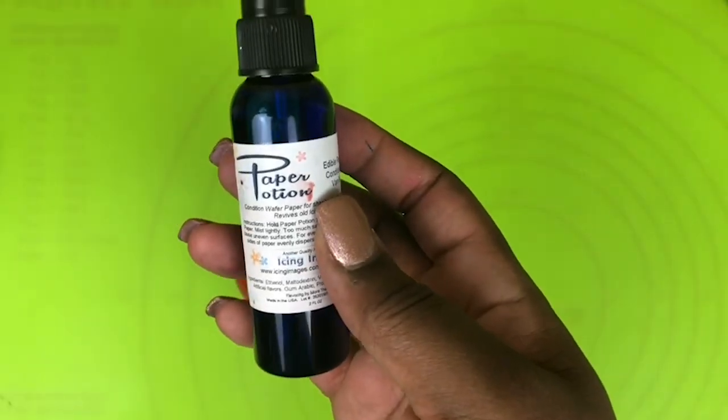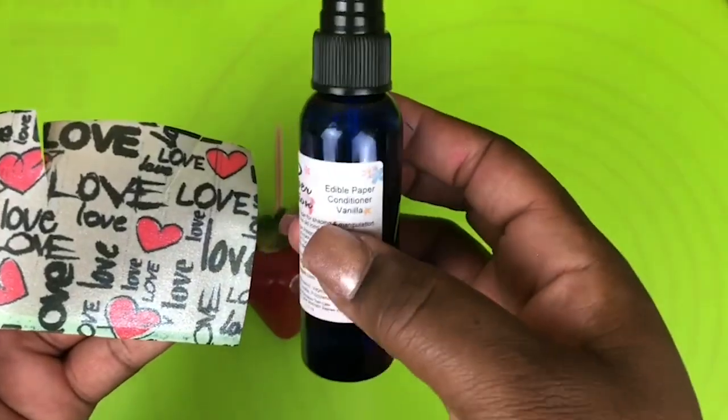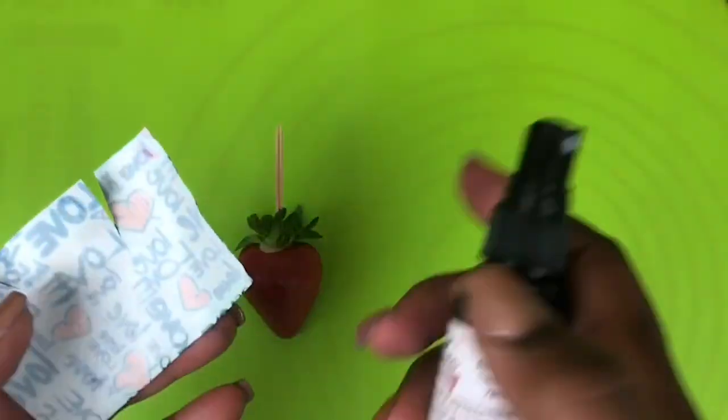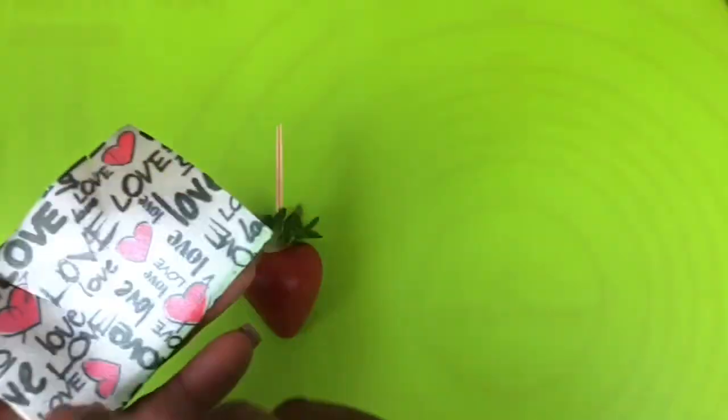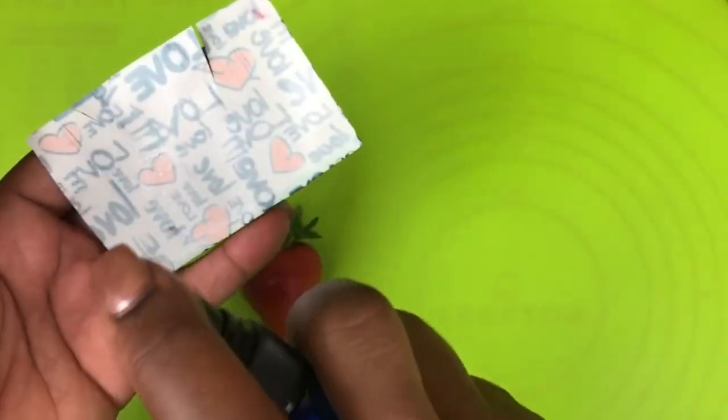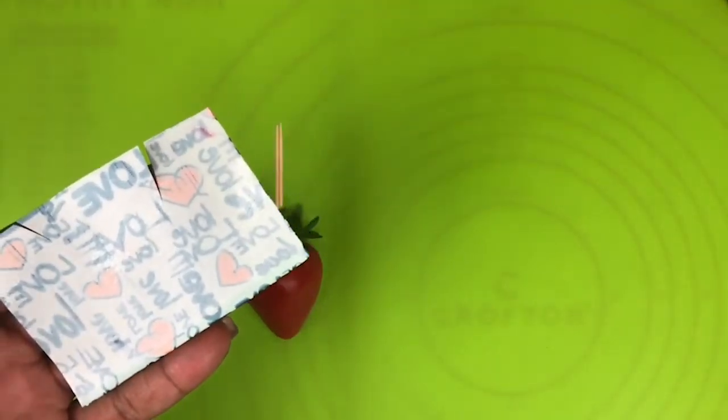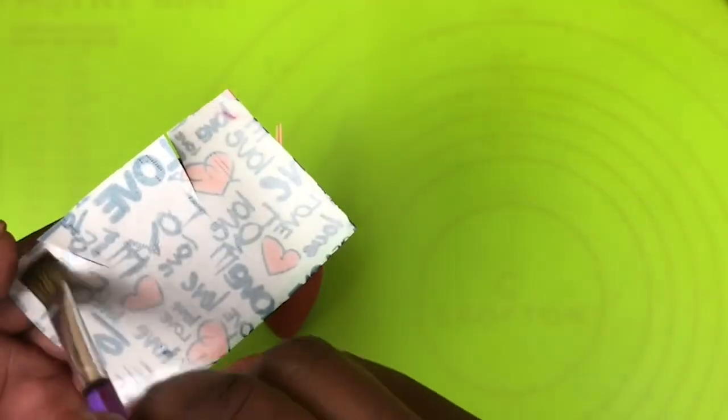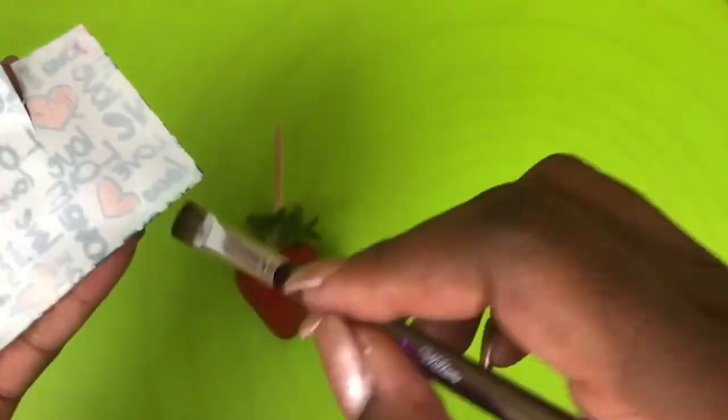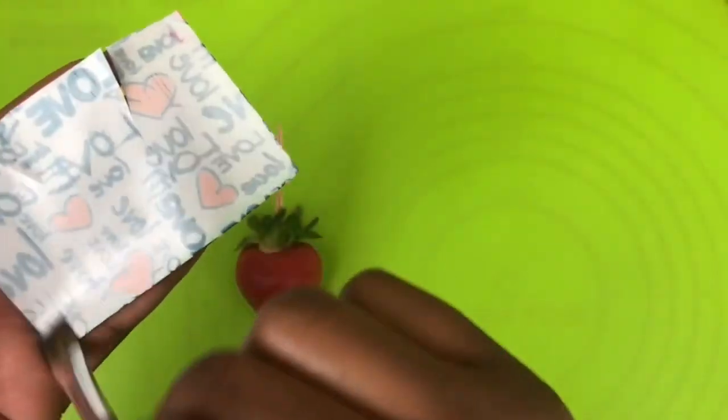I'm going to take my paper potion and you want to spray the back of the flex frost sheet, or you can also pour this in a cup and just take your brush and just apply a thin application on the back of the flex frost sheet because what you don't want to do is smear the image. You want to make sure you have a good clean image.